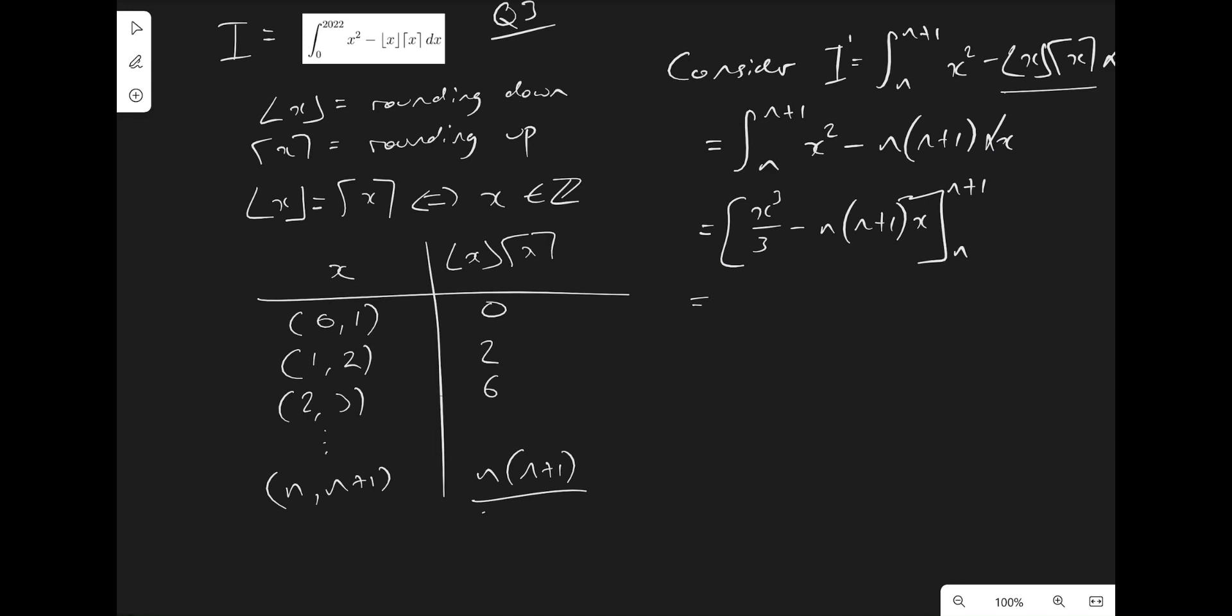So when we sub these limits in, what we're going to get is n plus 1 cubed over 3. Take away, when we put n plus 1 in here, we're going to have n, n plus 1, n plus 1. So there's two lots of n plus 1, so that gets squared. And then we'll take away when we substitute the n in. So it's going to be n cubed over 3 minus n, n plus 1, n. So there's n squared in that part. So n squared, n plus 1.